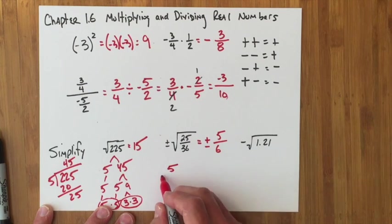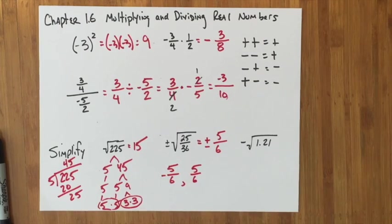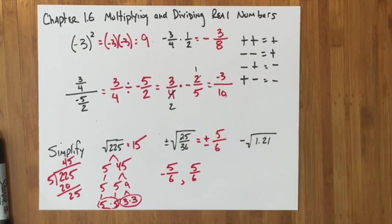You know, if you really wanted to, you could write something like negative 5/6, comma positive 5/6, but of course that's extra writing, so some people prefer this.